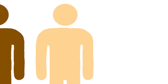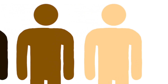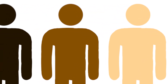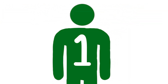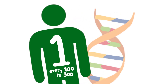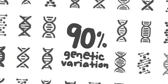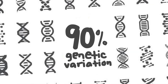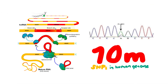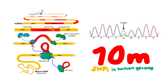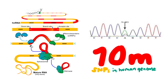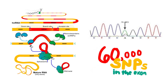It is possible that humans have many SNPs, as these variations occur approximately 1 in every 100 to 300 nucleotides in the human genome. About 90% of genetic variation between humans arises from SNPs. Approximately 10 million SNPs have been identified in the human genome, of which 60,000 are located in the exons.